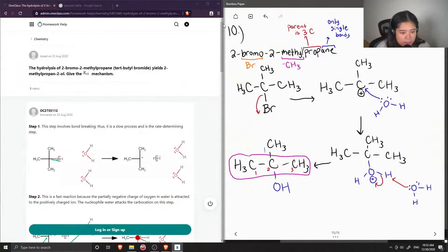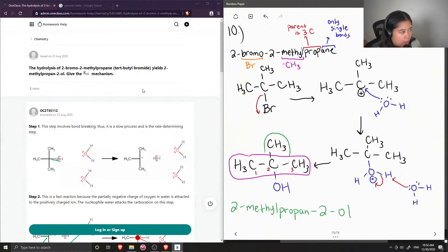So on carbon 2 there's a methyl. So to name this, it would be 2-methyl, and then when we have an OH as our substituent, this is going to be put at the end of the word. So I just need to name the parent, so propan, and then on carbon 2 is our alcohol, so 2-ol. And then let's look at the question, so this yields 2-methylpropan-2-ol, so we know that we did the mechanism correctly.